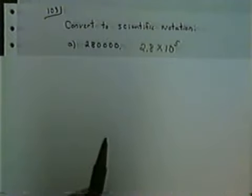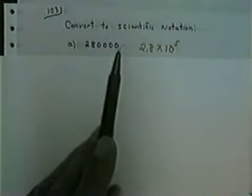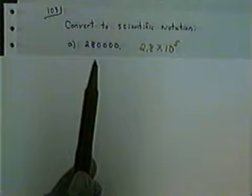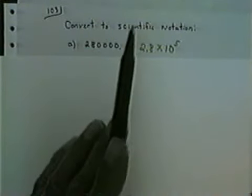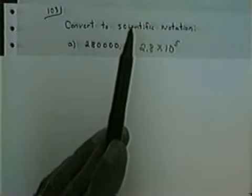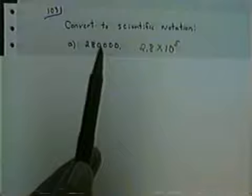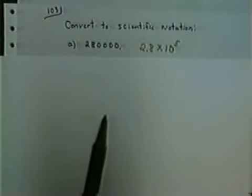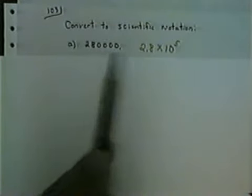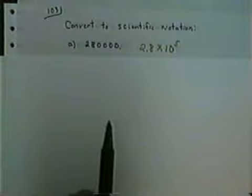Some of you might say: before you said a positive exponent means move the decimal to the right, but you moved it to the left. Remember, we're reversing the process. Before, we were going from scientific notation to decimal — a positive exponent said move to the right. Now we're going from decimal to scientific, so we go in the opposite direction. Rather than worrying about that, remember that large numbers give positive exponents, and simply count the number of spaces.